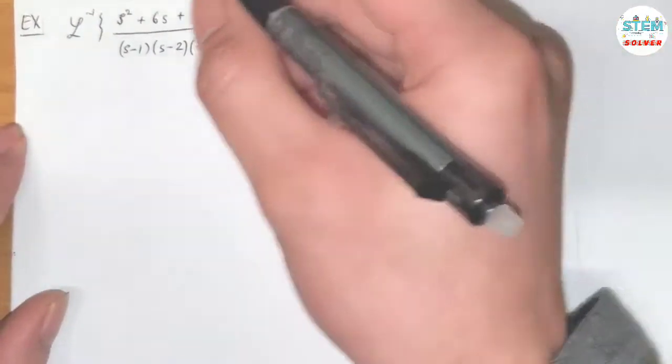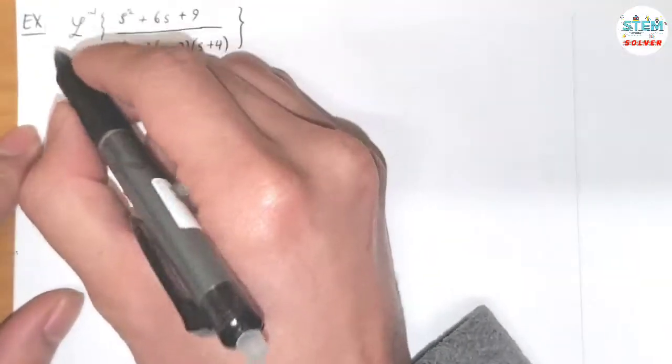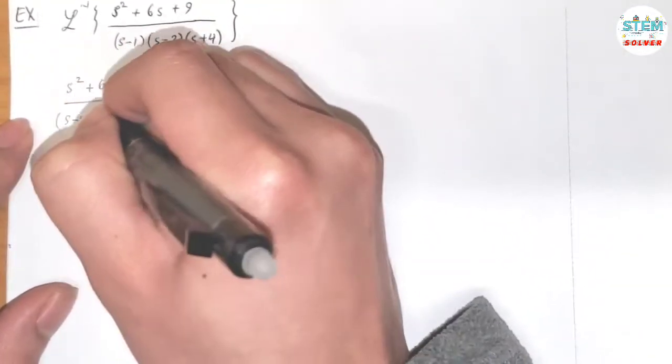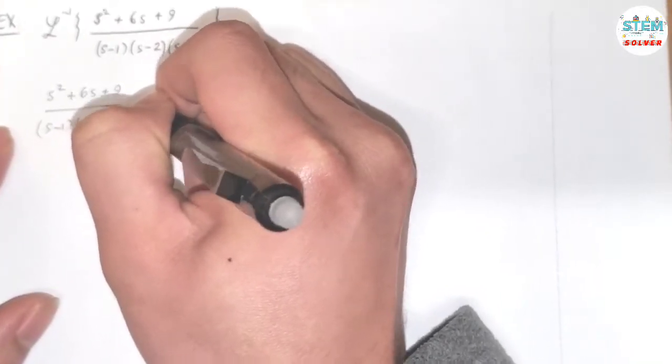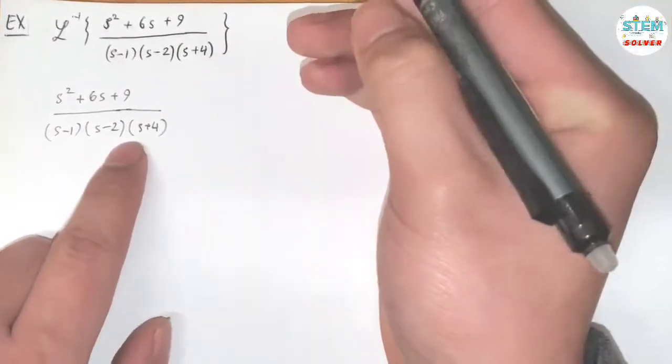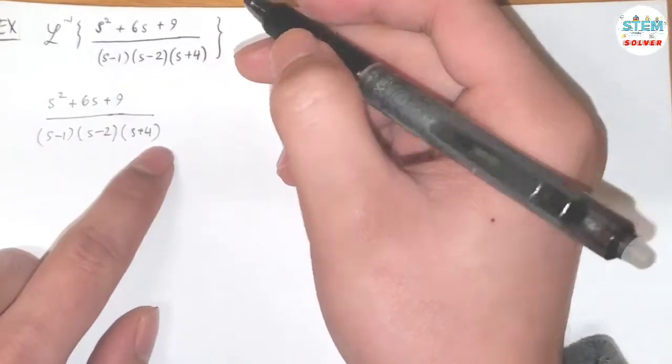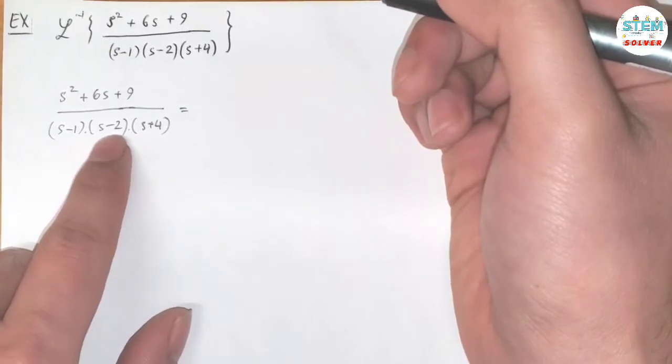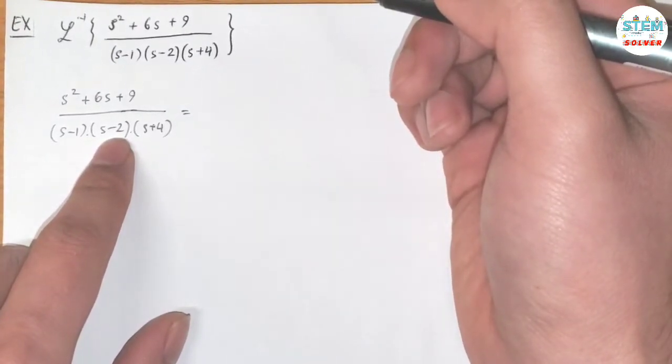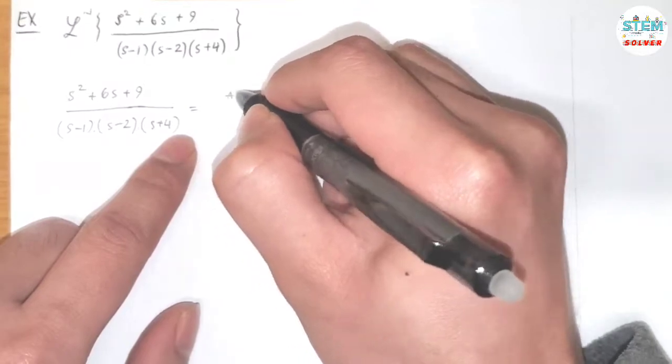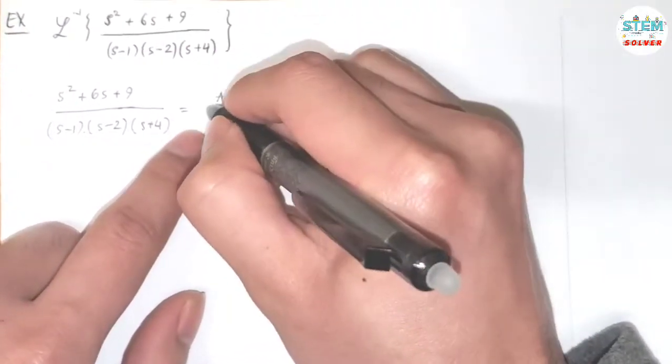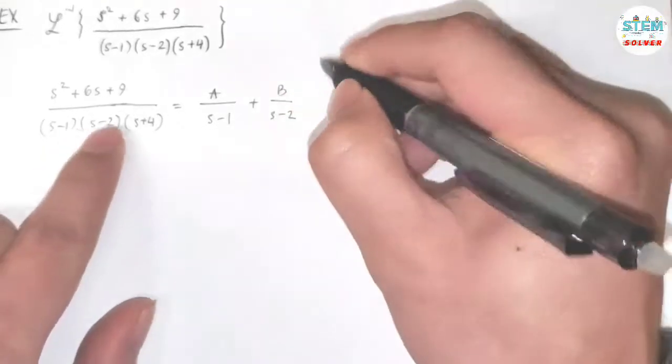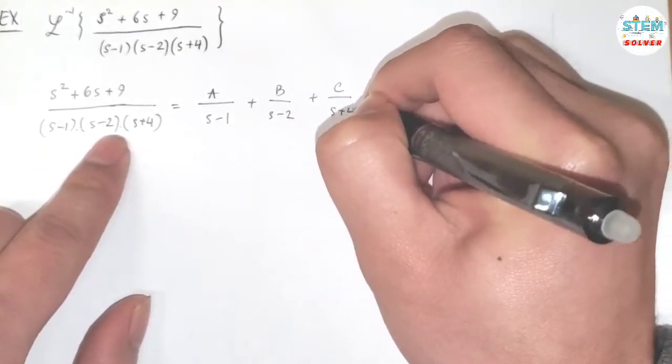Let me rewrite it and work on this specifically: x² plus 6x plus 9 over (x minus 1)(x minus 2)(x plus 4). So to rewrite this in a fraction form of single terms, we need to use partial fraction decomposition. I'm going to have variable A over x minus 1, which is the first factor, plus B over x minus 2, plus C over x plus 4.